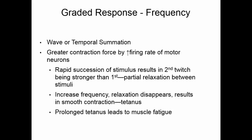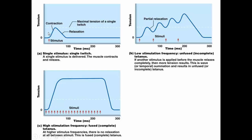If a muscle is in tetanus for a long period of time, the muscle will fatigue. A basic muscle twitch shows the latent period, contraction, and relaxation. As we increase frequency, the muscle contracts and relaxes a little bit less each time, reaching higher and higher peaks. With stimuli coming so quickly that the muscle never relaxes, we stay in contraction until we stop the stimulus and allow the muscle to relax. This is how your muscles work most of the time — in tetanus.